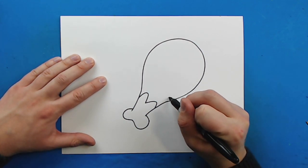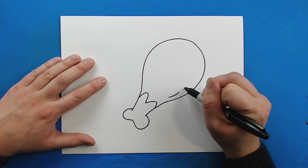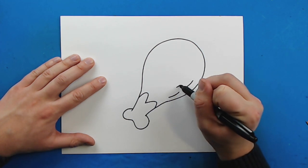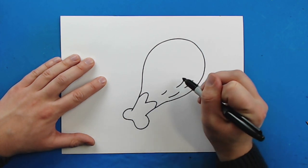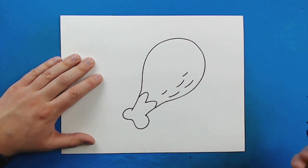Then over here, I'm just going to make a couple little curved lines like this, just going to add a little bit of detail on here, just like that.